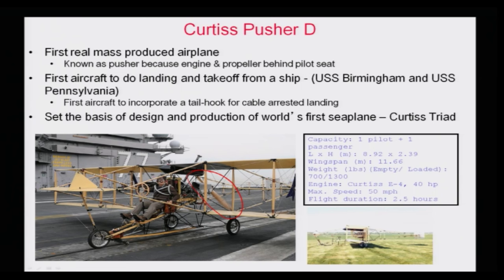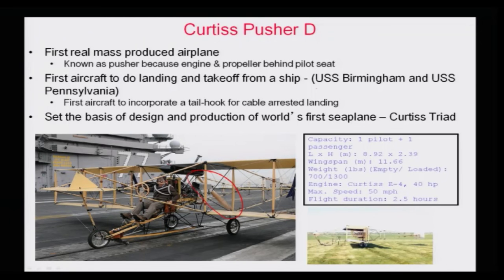The engine and propeller, highlighted in red, are behind the pilot seat. It is also the first aircraft to perform a naval operation — meaning take-off and landing from a ship. The first take-off and landing was on USS Birmingham, an American aircraft carrier, and it also took off from USS Pennsylvania. So in a way, this is the first aircraft to do naval operations.